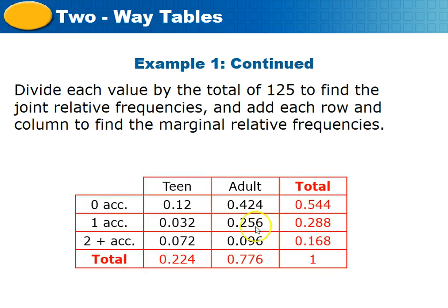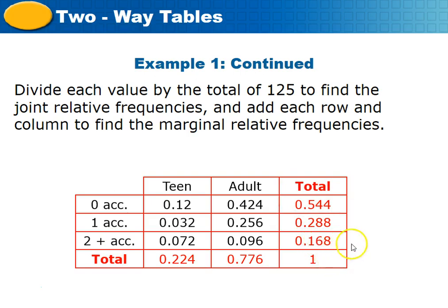The values you should get are: 0.12, 0.032, 0.072, 0.424, 0.256, and 0.096. Then total the teens and total the adults — when added together they should equal 1. Also total the 0 accidents, 1 accident, and 2-plus accidents columns — those totals should also equal 1. If they don't, go back and check your math.